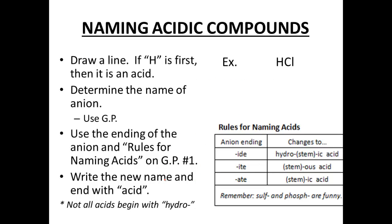Our first step is to draw a line between the first element and the rest of the formula. If it begins with H for hydrogen, then it's going to be an acid — that's our cue right away. To determine the name of the anion, we're going to use the gold packet, or your periodic table, and the rules of naming anions from our gold packet.